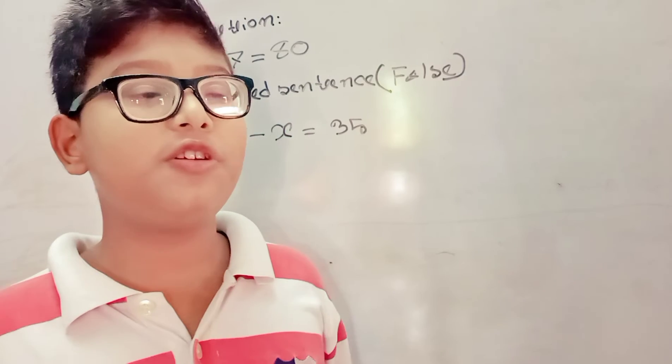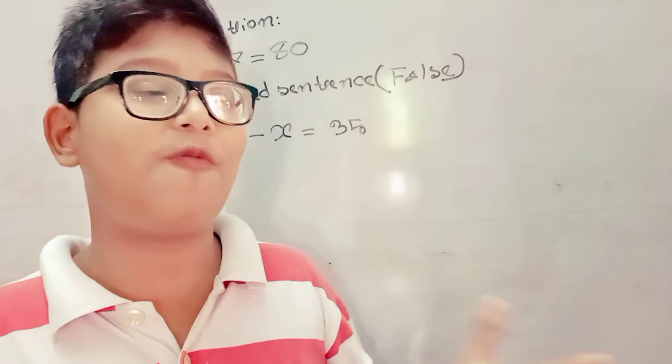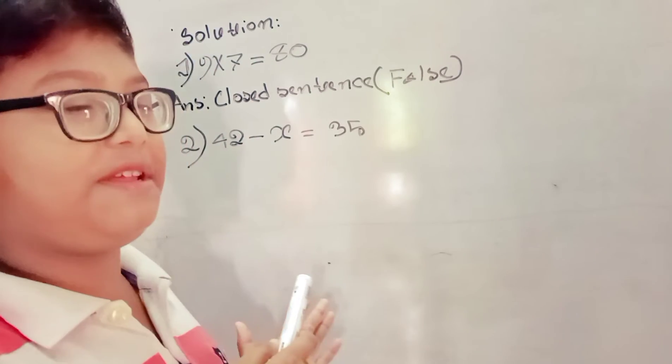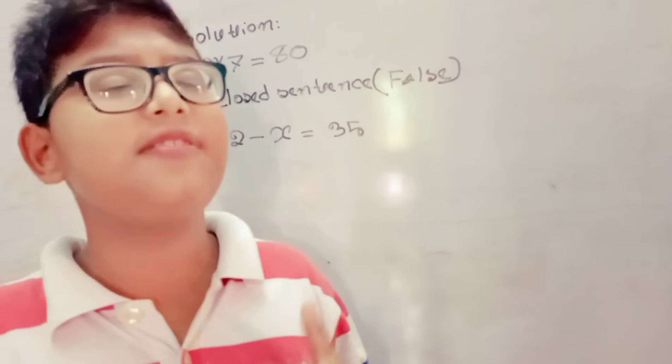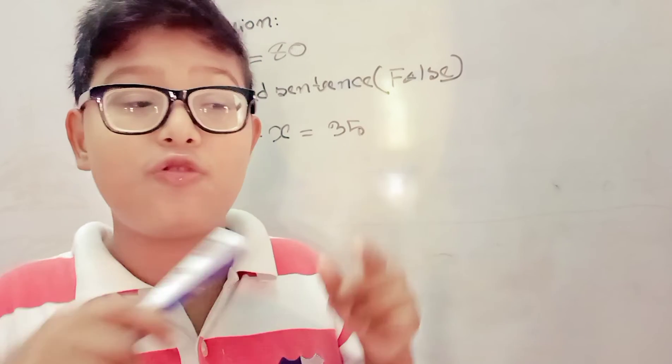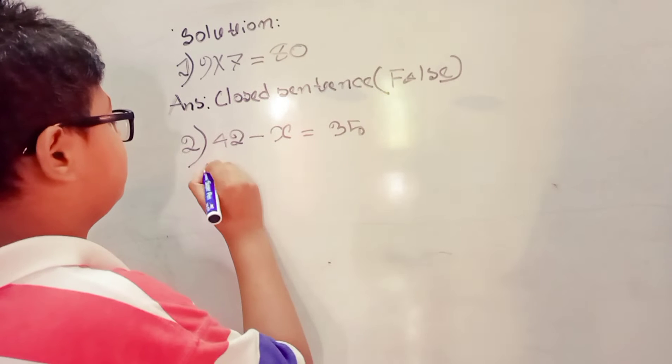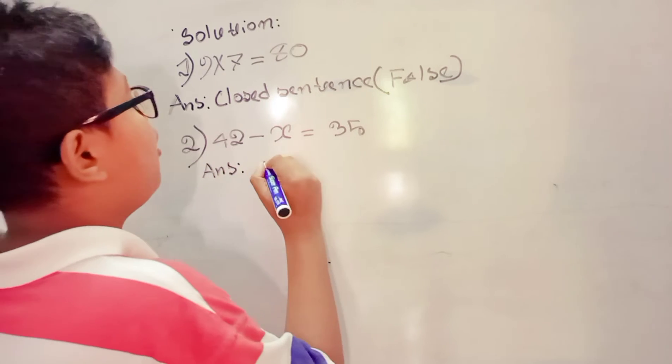If we don't know the value of x, we can't verify true or false. So, it is an open sentence. A sentence is called open when we don't know whether it is true or false. So, we can write answer: open.